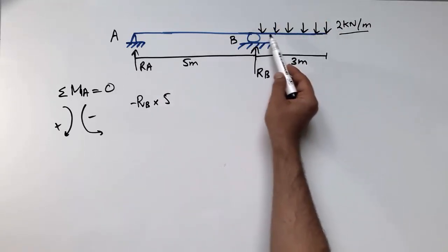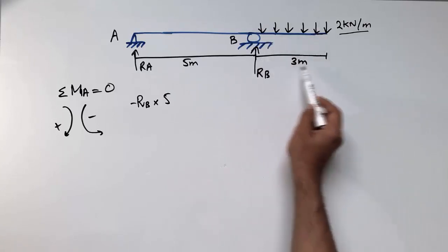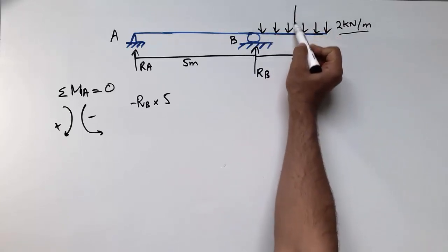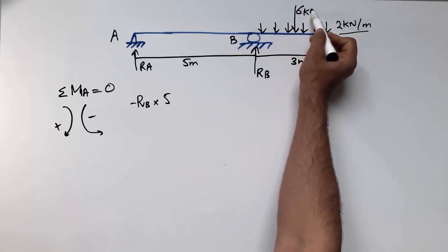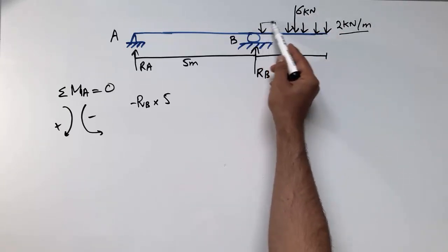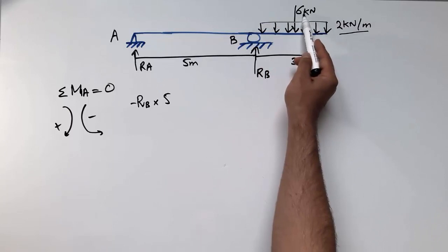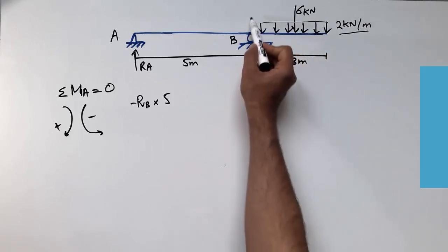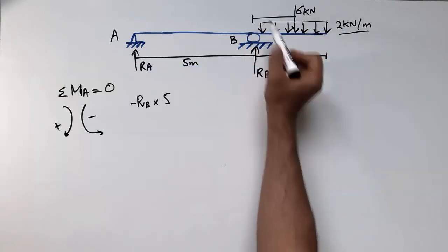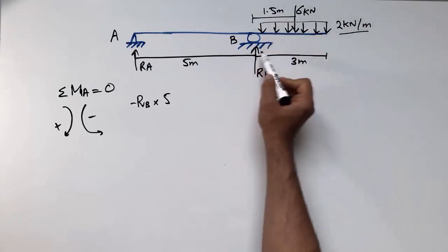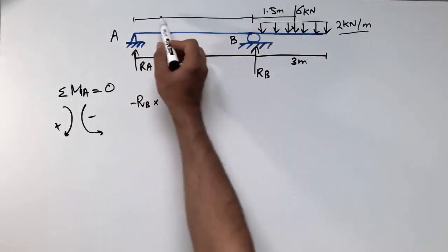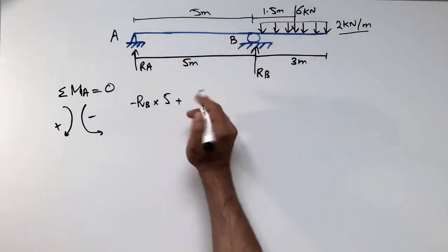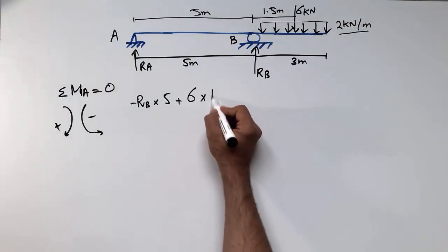To convert the uniformly distributed load into a concentrated load, we multiply the load intensity by the length: 2 kN/m × 3 m = 6 kN. The moment arm for this load is 1.5 m (half of the 3 m cantilever length) plus the 5 m span, giving a total arm of 6.5 m. This acts clockwise, so it is positive: 6 × 6.5.